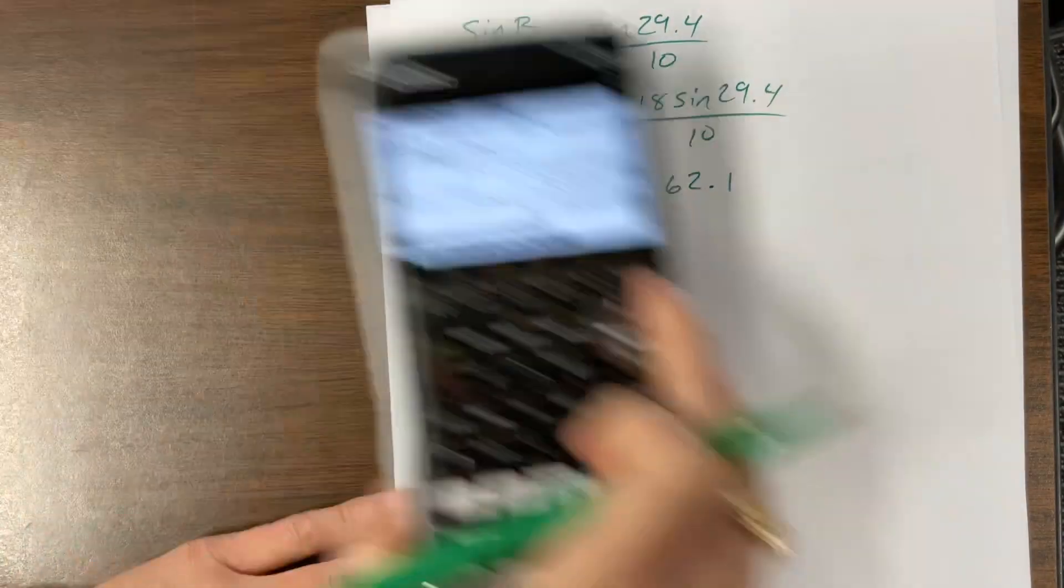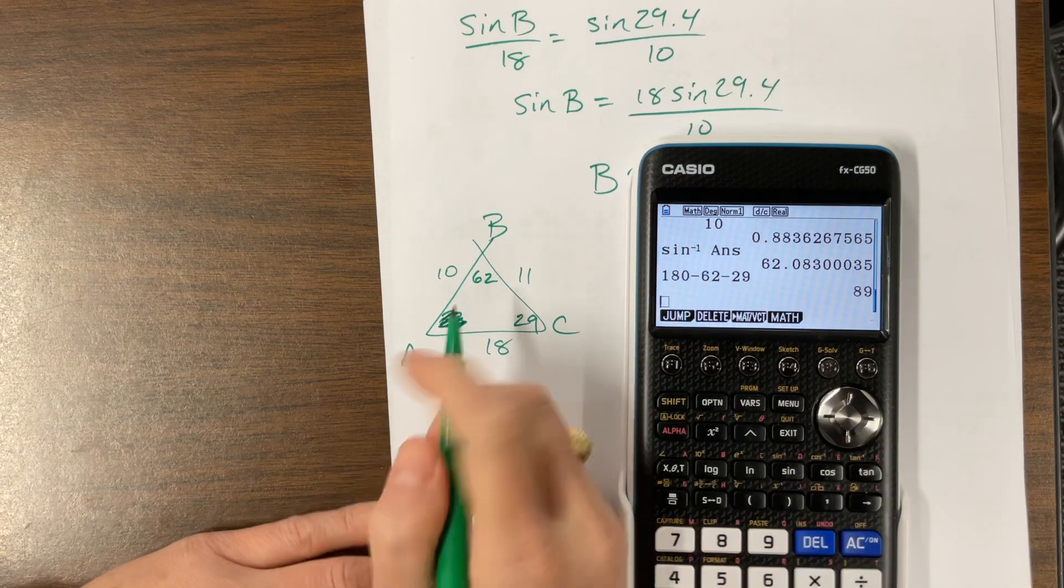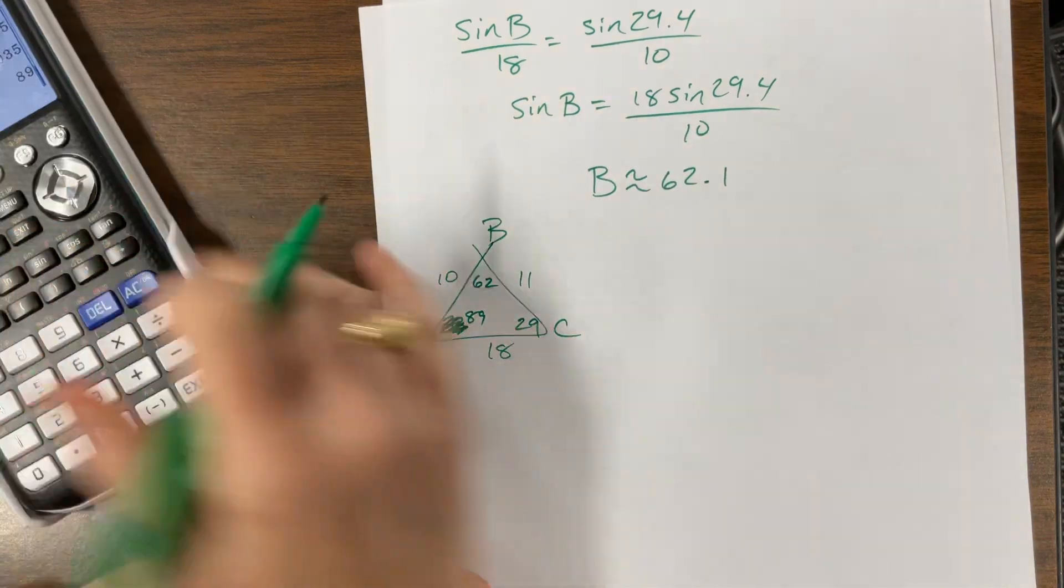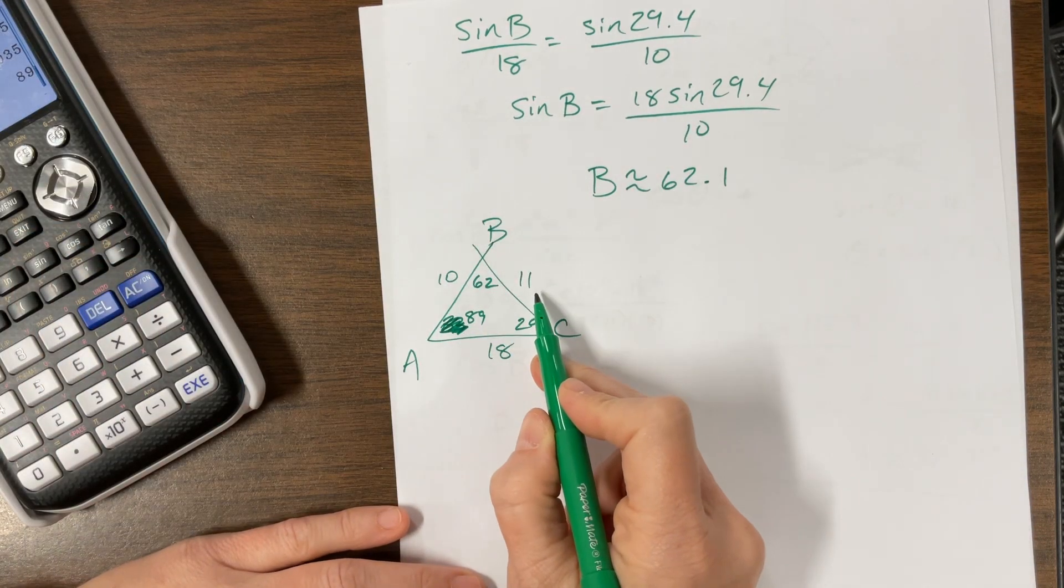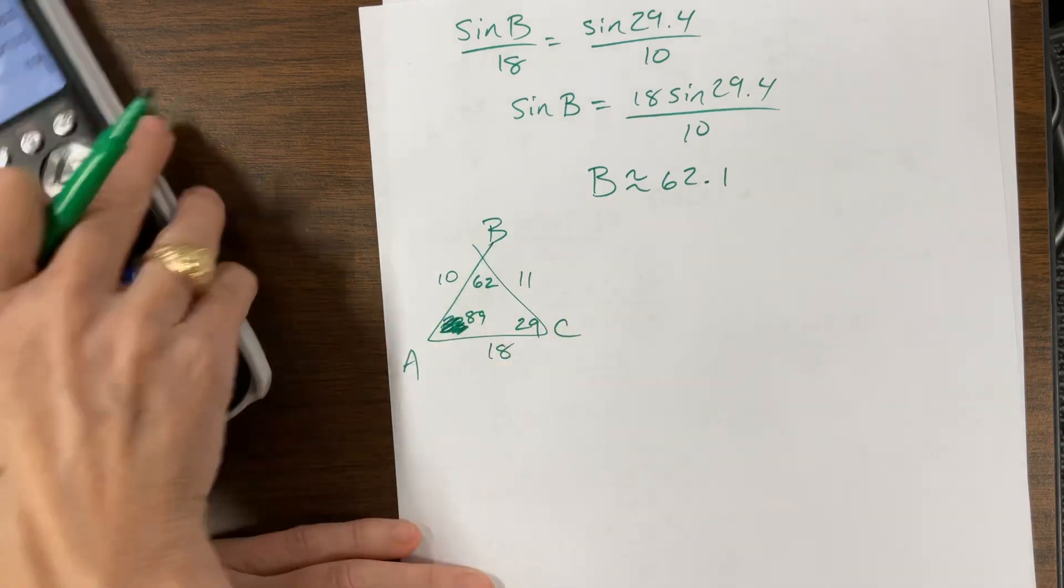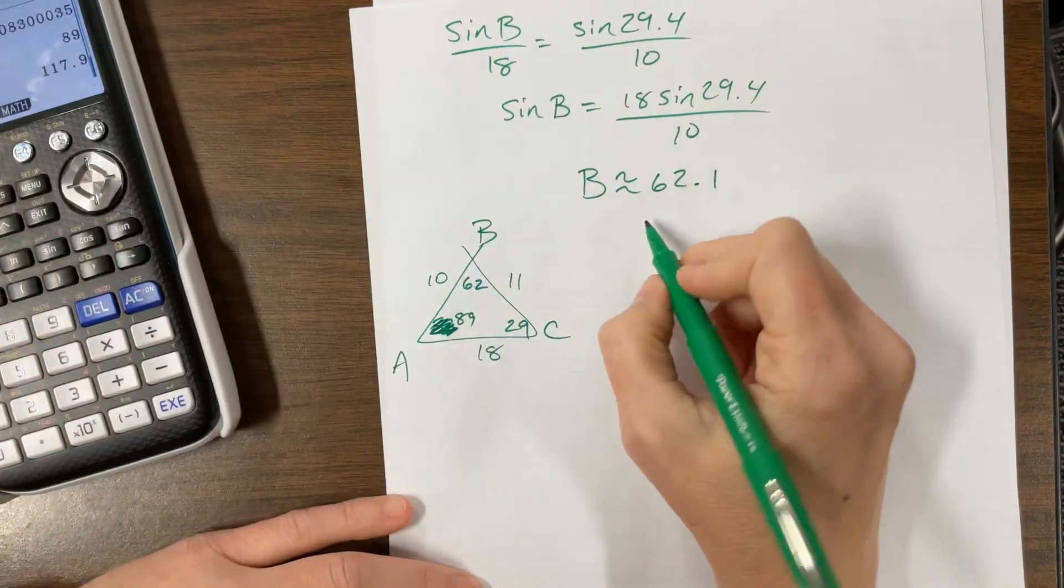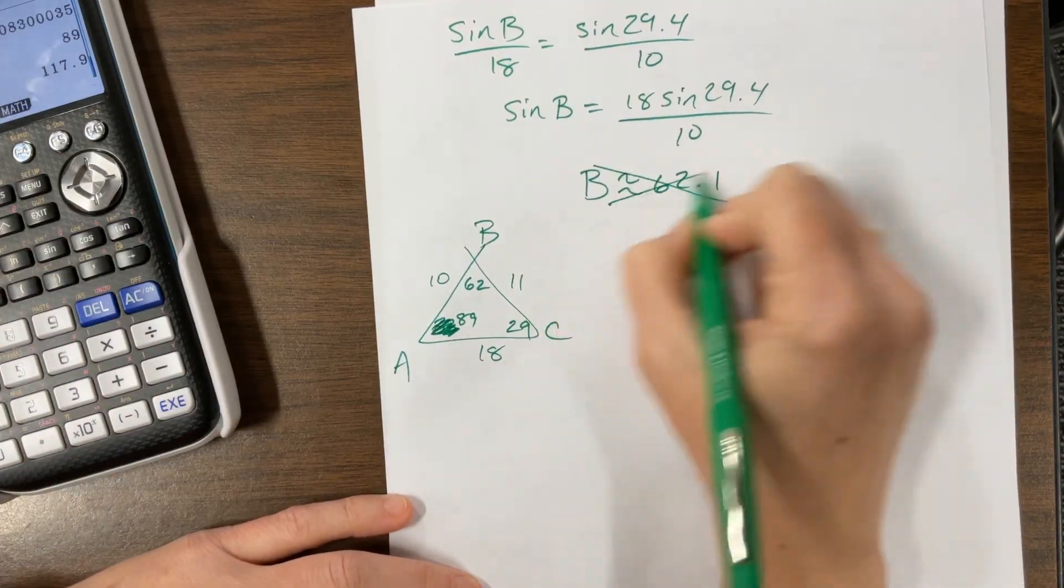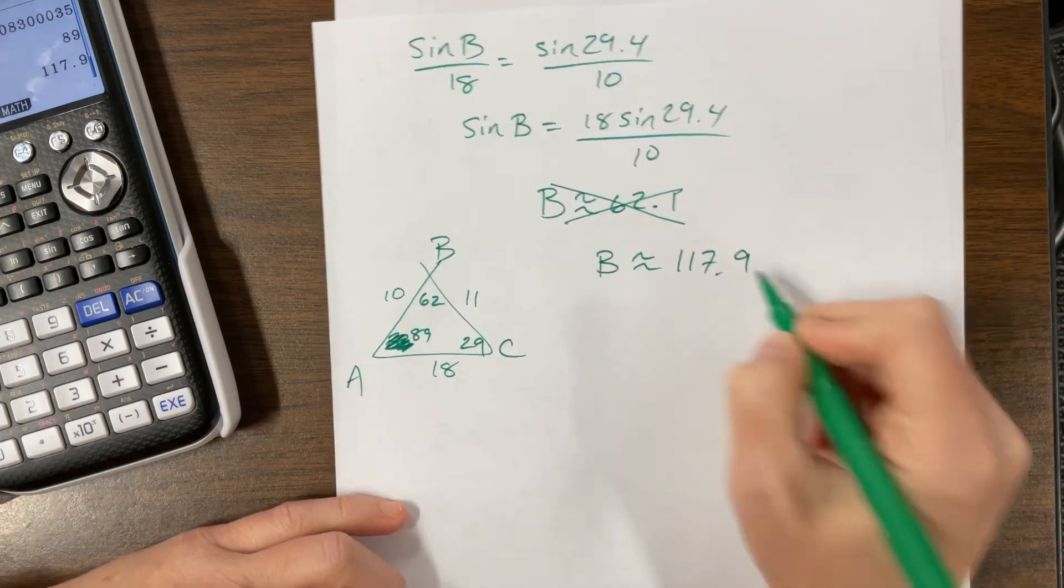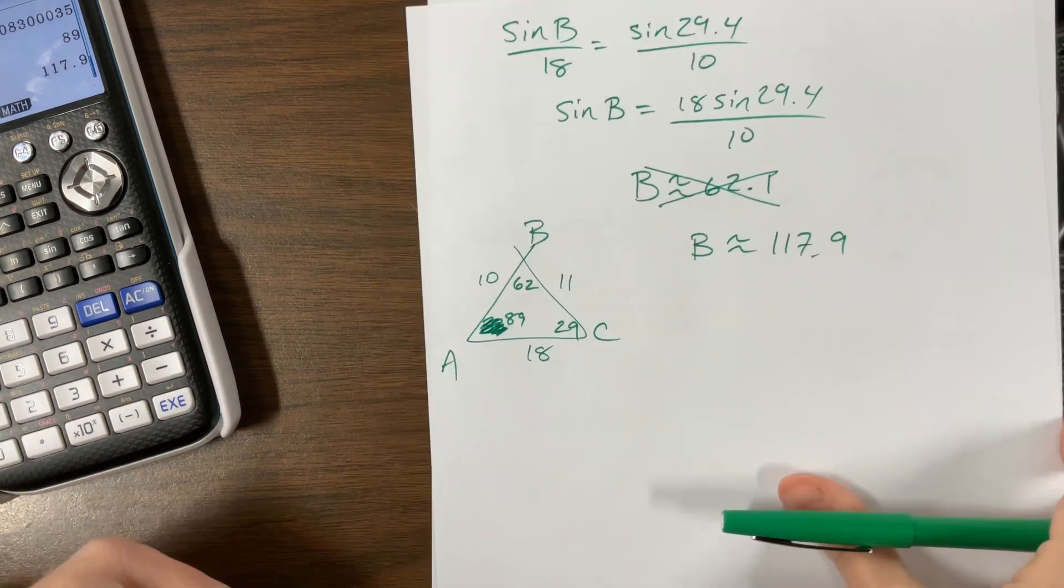Okay, and so then if I take, well, I know 180 minus 62 minus 29, this is going to tell me I have about an 89 degree angle. Well, when you look at this, we have, this is the largest angle, but this is not the longest side. So this tells us we did something wrong. So if we look at what's the supplement 180 minus 62.1, we should have not used this one. We should have let B equal 117-ish. 117.9, I think, or whatever. I'm skipping all the decimals because I just want to get the idea of this across to you.